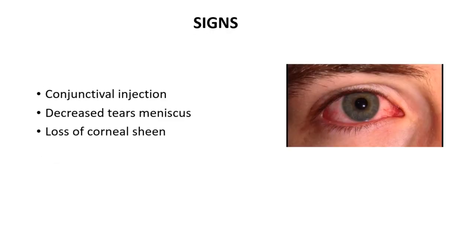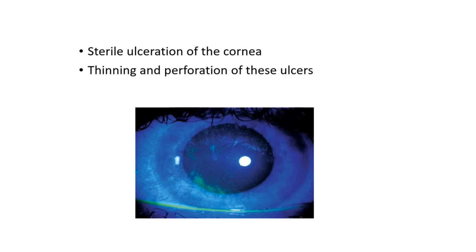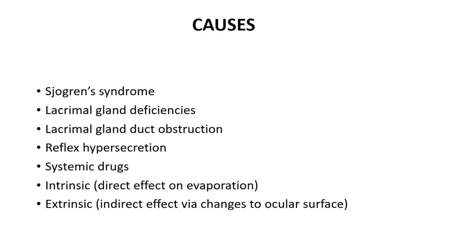Signs include conjunctival injection, decreased tear meniscus, loss of corneal sheen, rapid tear film breakup, filamentary keratitis, sterile ulceration of the cornea, and thinning and perforation of these ulcers.